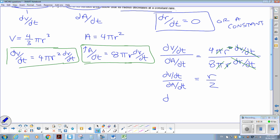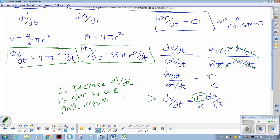So that means that our volume is dependent on our surface area and the radius at that point. So that means that since there's no dr by dt in the equation, that means that it must be a constant, or it cancels out, so it must be a constant. So therefore, because dr by dt is not in our final equation, it must be a constant.